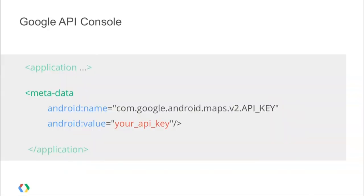Once you've gone through that process, it will give you an API key. Because it's associated specifically with your certificate and package name and is unique, you can put it into your manifest as shown here and all your Google Play Services will start working.